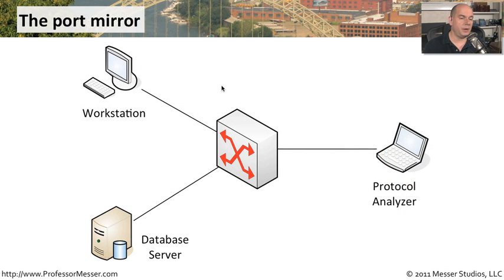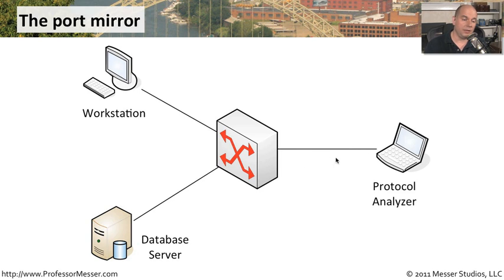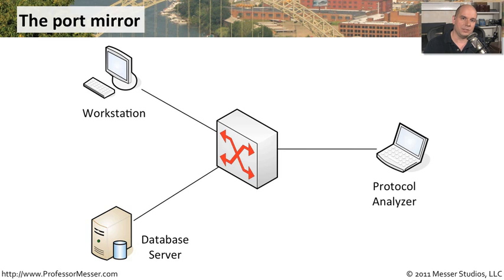Here's how the port mirror works. Say we have a workstation communicating to a database server, and we'd like to see the packets associated with that communication. We plug a protocol analyzer into the switch and tell the switch: if you see anything from the workstation to the database server, send a copy to the protocol analyzer — and do the same in the other direction. The switch then duplicates that traffic and sends it to both devices, in both directions.